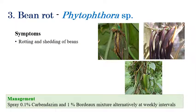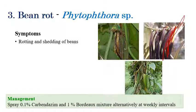Bean rot is caused by Phytophthora species. Rotting of beans showing clear light brown to black color discoloration can be seen, along with rotting and shredding of beans. Spraying of 0.1% carbendazim or 0.1% Bordeaux mixture alternately can reduce this infection.